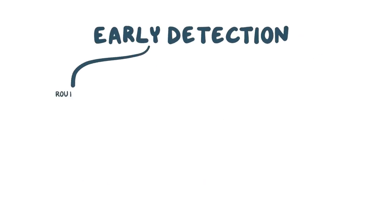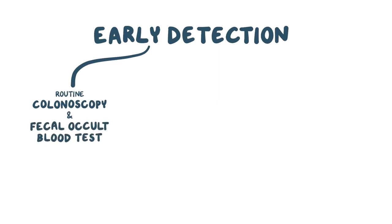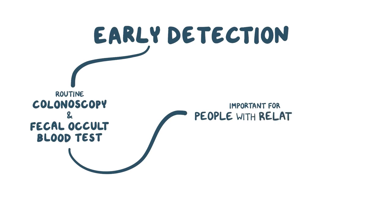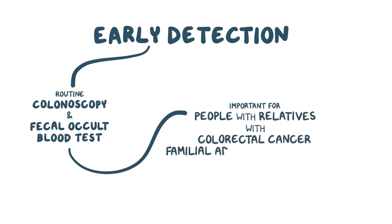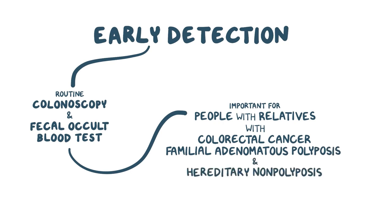To identify colorectal cancer early, routine colonoscopy and fecal occult blood tests can be done to look for neoplastic polyps or early carcinomas so that they can be removed at an early stage. This is particularly important for individuals with relatives that have colorectal cancer, and for those with disorders like familial adenomatous polyposis and hereditary nonpolyposis colorectal cancer.